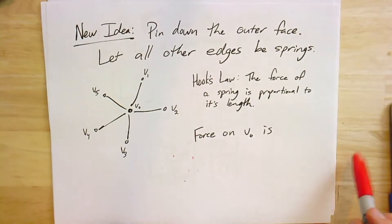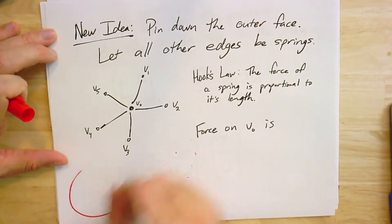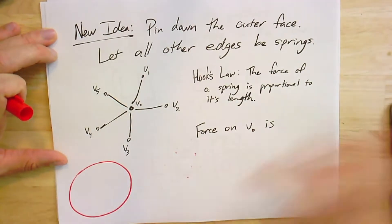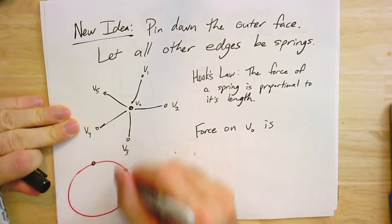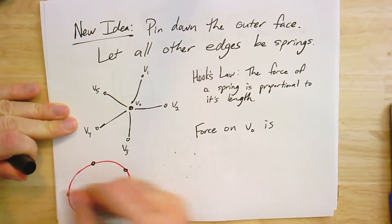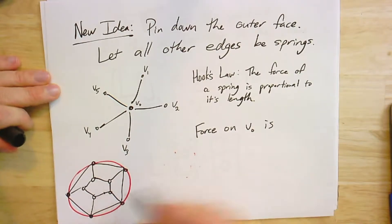So this spring idea in its simplest form doesn't work. I mean, you can find an example where it sort of satisfies the usual physics equations for springs, but it will put all the vertices exactly on top of each other. So we need a new idea. And so here's the slightly better idea. If you pin down the outer face, so you take one face and you say, this is going to be my outer face, and you put those on a circle.